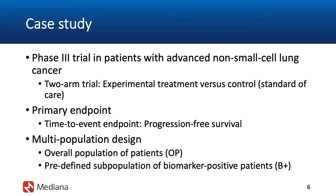Specifically, the patient population is patients with advanced non-small cell lung cancer. The primary endpoint is again defined based on PFS, progression-free survival, and a multi-population design would be employed in this case study. We will also assume, as in the Saturn trial, that we have a biomarker-based classifier. Using this classifier at the time of patient enrollment, we will define a group of patients who are more likely to experience a beneficial effect and are more likely to respond to the experimental treatment — they will be labeled biomarker-positive patients. Patients in the complementary group would be referred to as biomarker-negative patients.